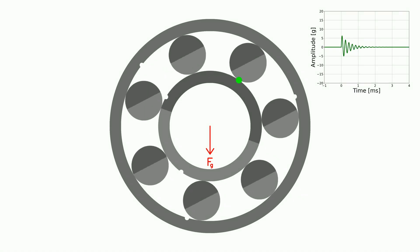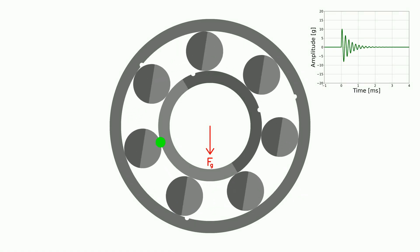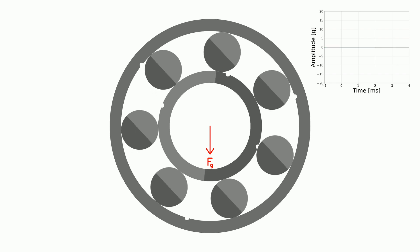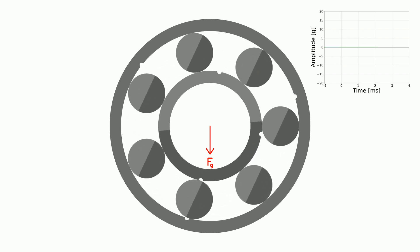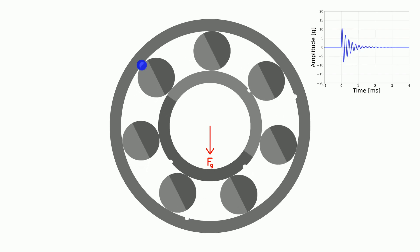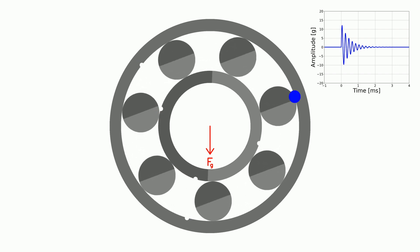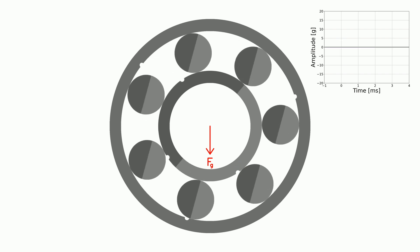There is another influence which may modulate the amplitude of shocks. Weight. Because of gravity, the weight of the horizontal shaft acts with a downward force Fg. It puts more pressure on the bearing balls under it than above. Shocks produced there are stronger.